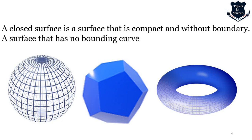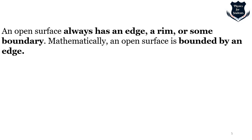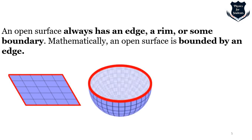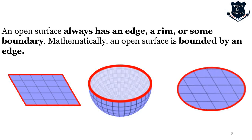Although it is strictly a topological definition, this is what a closed surface looks like. Contrary to that, an open surface is something which has an edge, a rim, or some kind of boundary. Mathematically, an open surface is bounded by an edge. As you can see in this figure, the red area represents the rim of a bowl or cup. In Gauss's law we deal often with closed surfaces, so it is important to understand the difference.